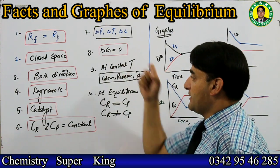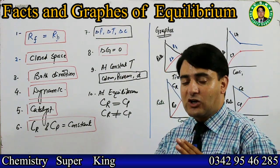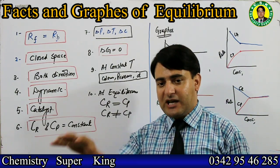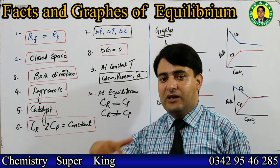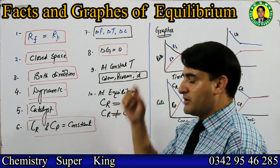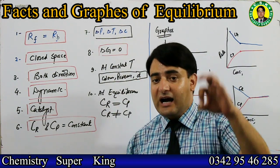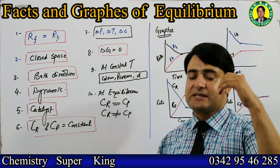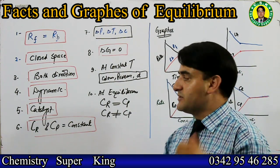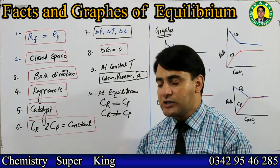At constant temperature, chemical equilibrium is characterized by constant color, pressure, and density. At equilibrium, the color, pressure, and density of a reversible system do not change. So we say: at constant temperature, chemical equilibrium is characterized by constant color, pressure, and density.